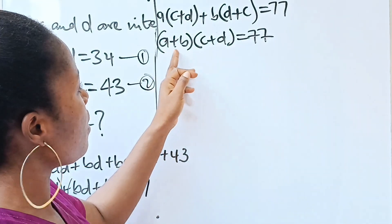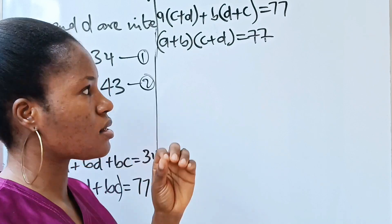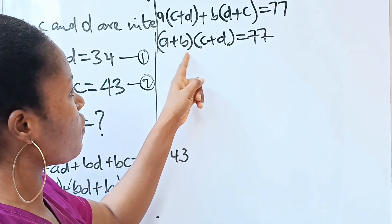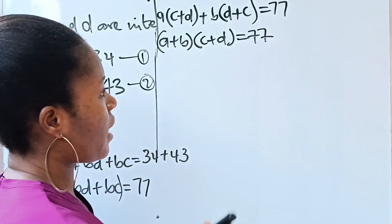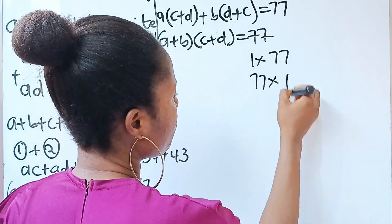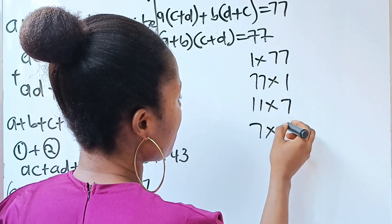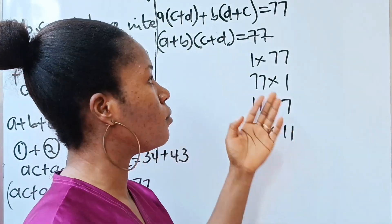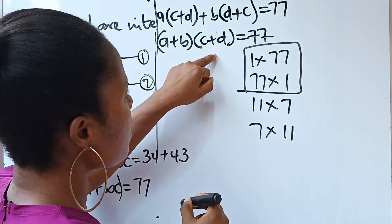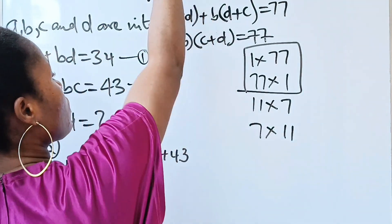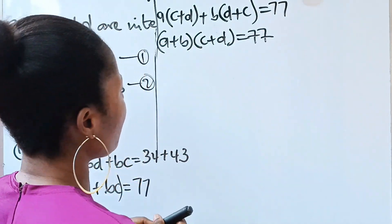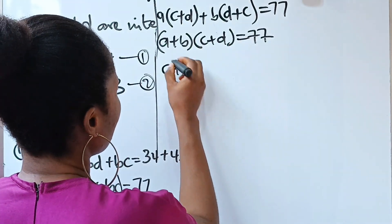Since a, b, c, and d are integers, the factor values must be greater than one — we can't have one as either of the factors. The factors of 77 are: 1 × 77, 77 × 1, 11 × 7, and 7 × 11. We eliminate the pairs involving 1, so we concentrate on 11 × 7 and 7 × 11.